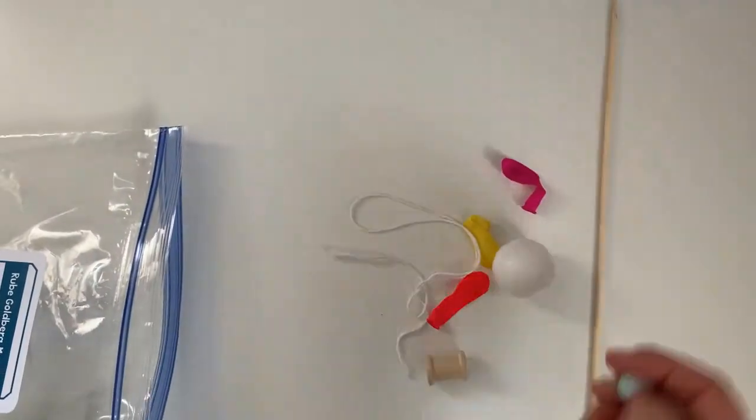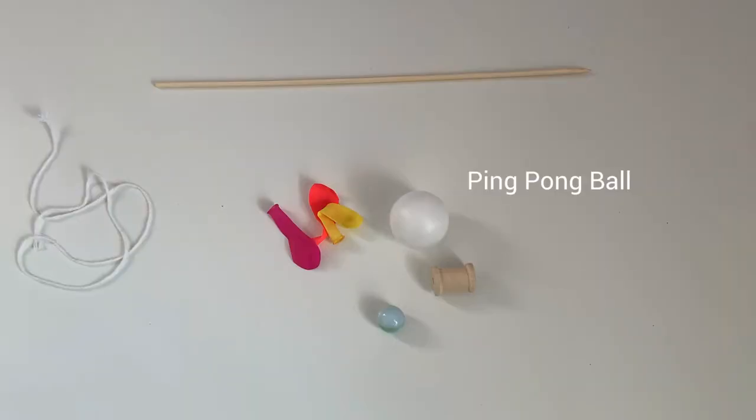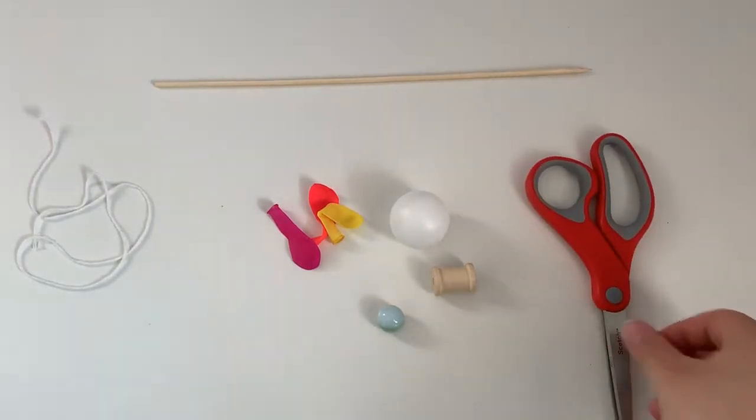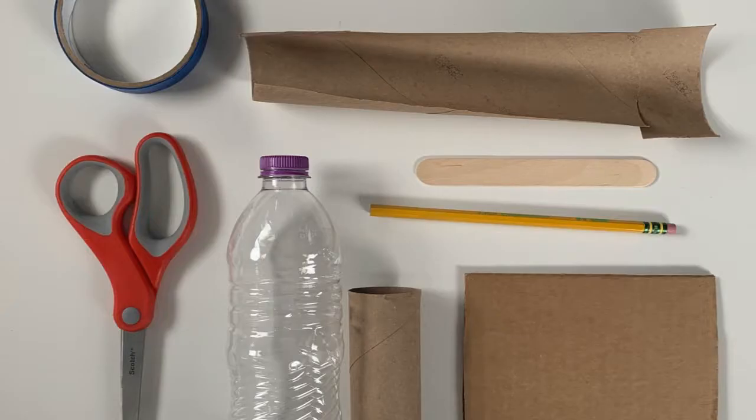In this kit you will find a few items that will get you started on your Rube Goldberg machine. A ping pong ball, a wooden spool, wooden stick like a skewer, a marble, water balloons, and some string. Not included in the kit are some scissors and some tape. These things will come in handy. You will also need some household objects that you can recycle for this project. Anything you have on hand will do.